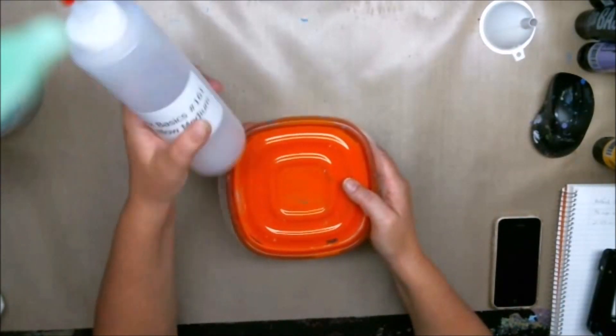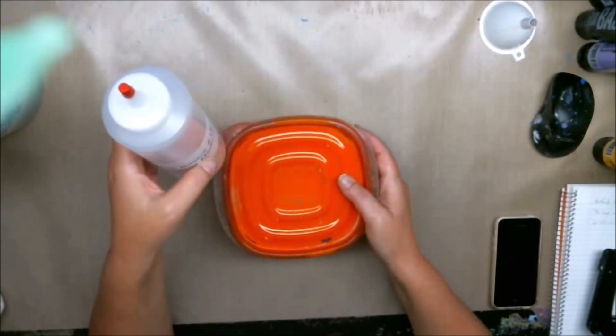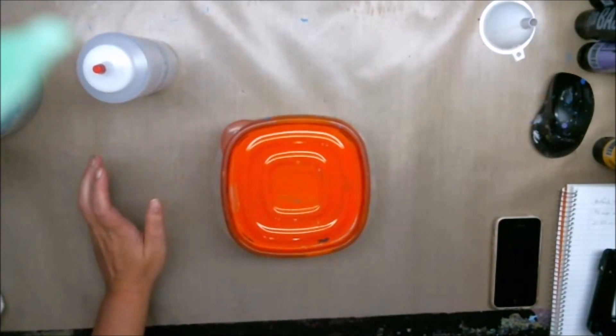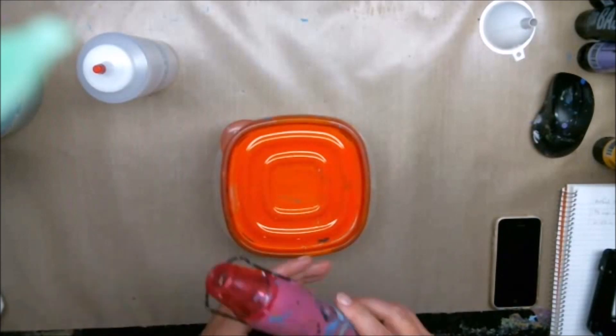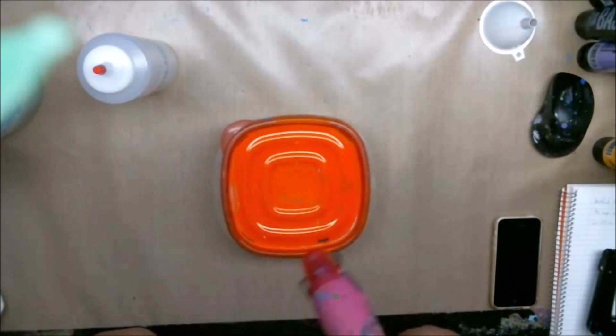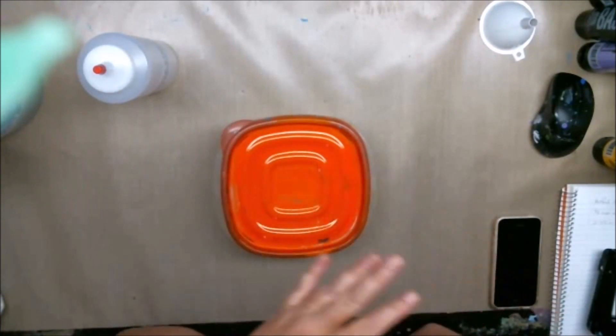So yes, I shake it, but then my paint sits in the container and will de-gas and de-bubble. But in my paintings you'll also see that I use a heat gun, so after I do the pour I turn the heat gun on and it pops all the bubbles on the top.